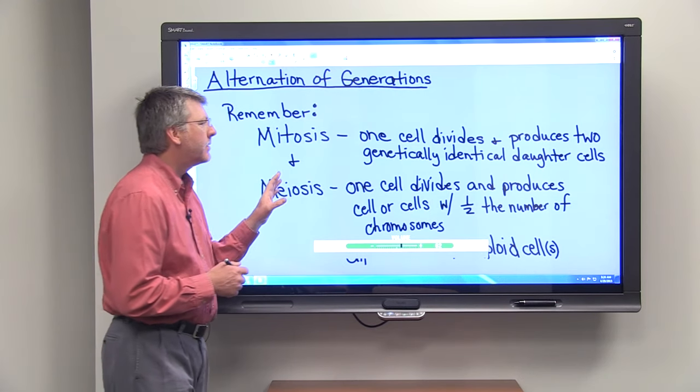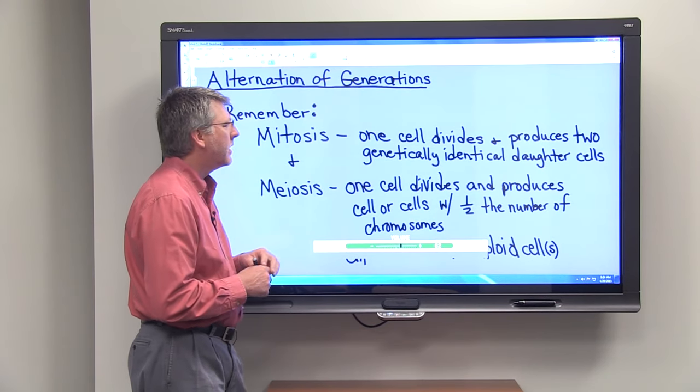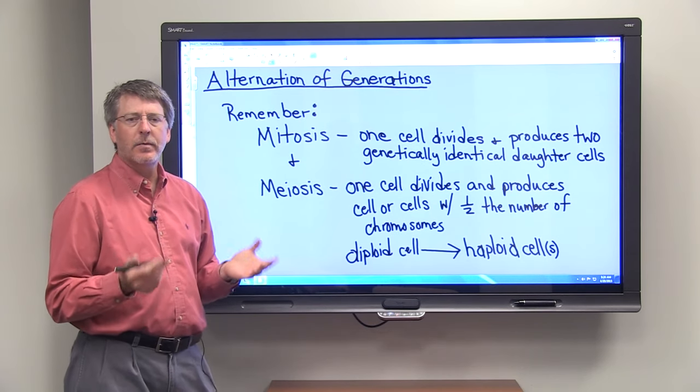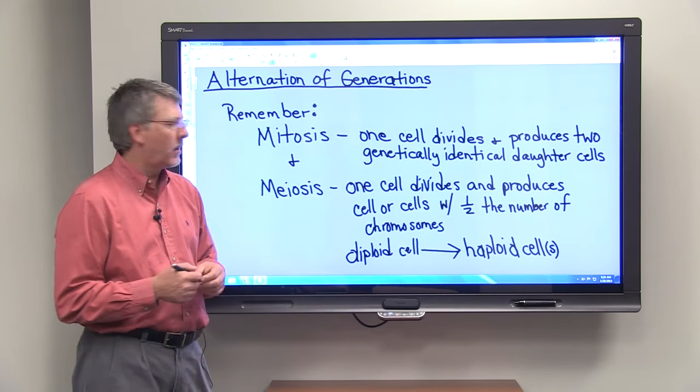Mitosis is a type of cell division in which one cell divides and produces two genetically identical daughter cells. So this is what growth and repair is all about.